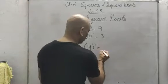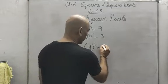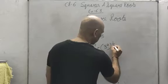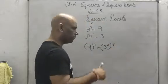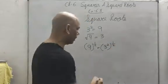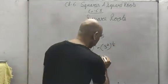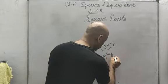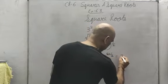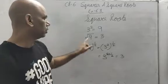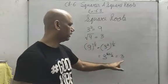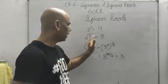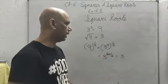How do we solve it? 9 means 3 squared. Power to the power is multiplied. So 3 to the power 2 into 1 by 2 — 2 and 2 cancel — giving 3 to the power 1, which is 3. So under root 9 is 3.